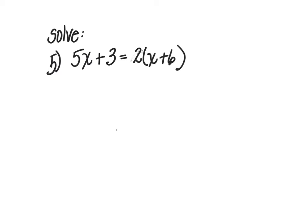On number 5, the equation is 5x plus 3 is equal to 2 times the quantity x plus 6. I'm going to draw my line down the equal sign first. On the left side, there's nothing to do, so I can just bring that side down. But on the right side, I do have to distribute the 2 to both terms in the parentheses. So 2 times x is 2x, and 2 times 6 is 12.